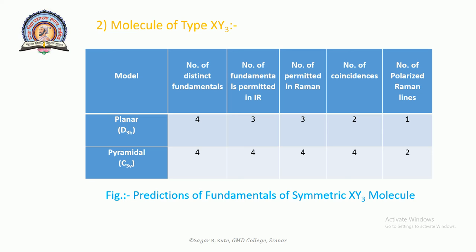Microwave investigation suggests a T-shape with two equivalent fluorine atoms and a third different from the other two. The point group of such a molecule is C2v, for which there are six distinct fundamental frequencies, all active in both Raman and IR.